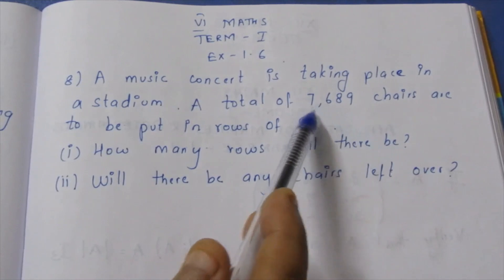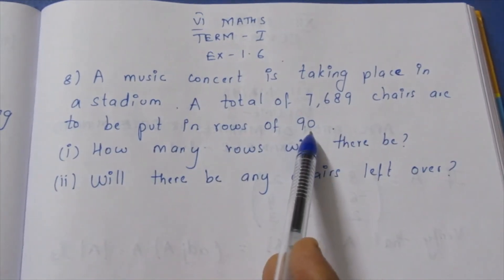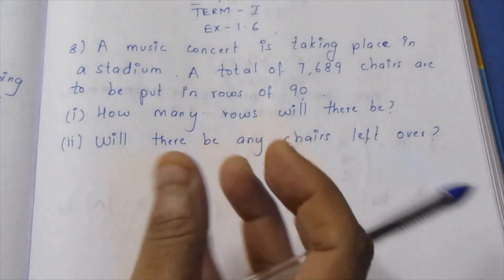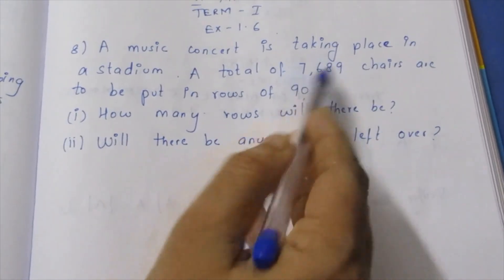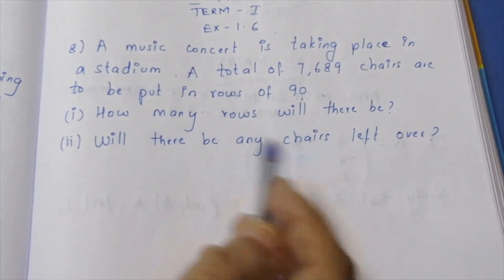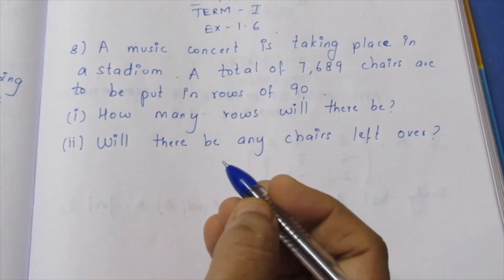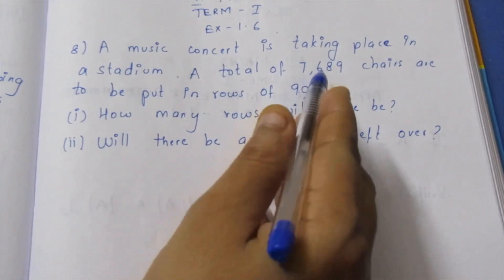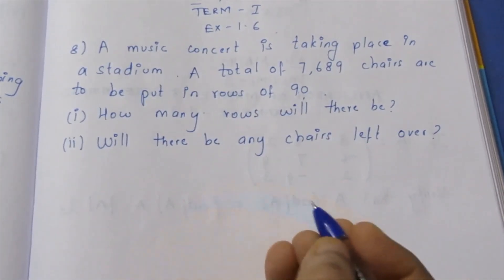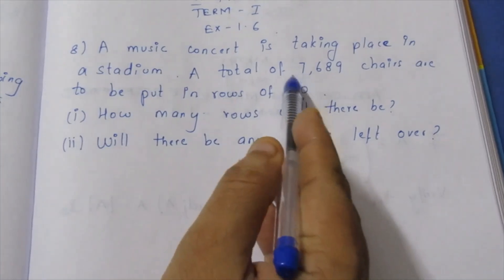So for the chairs, we will divide. We will use division or the unitary method. If you have one row with 90 members, we divide using the unitary method.